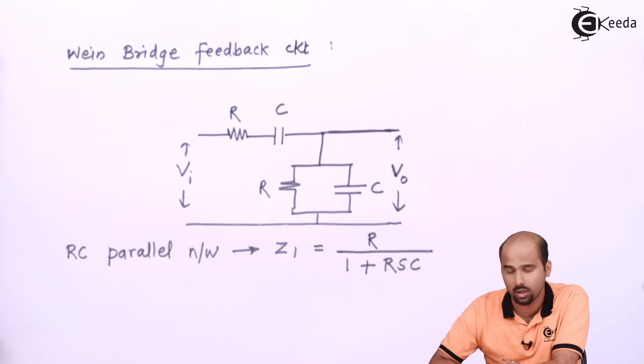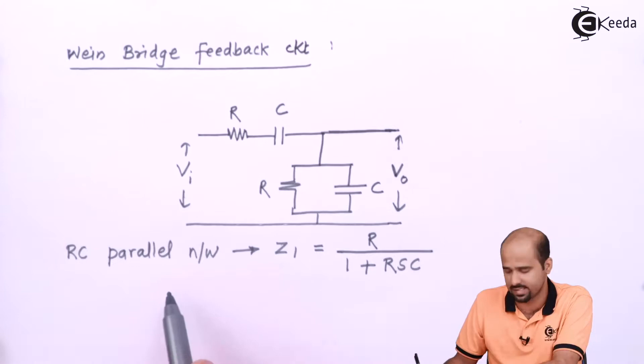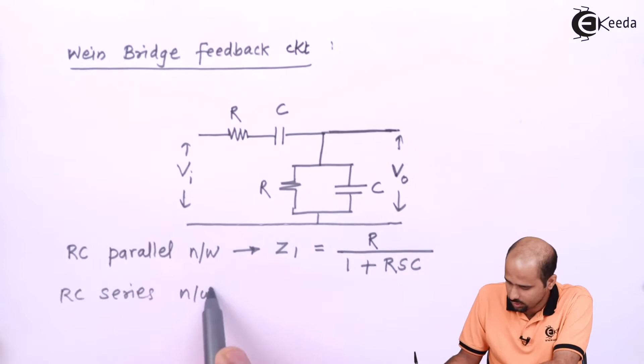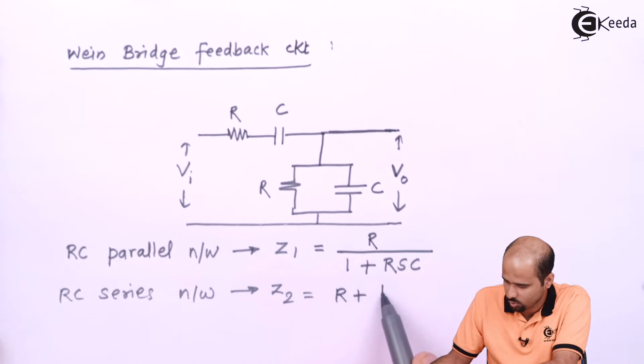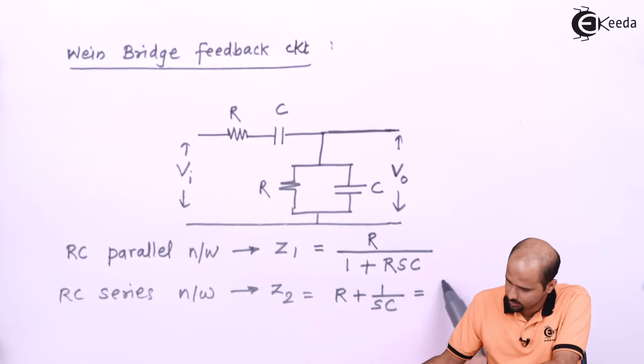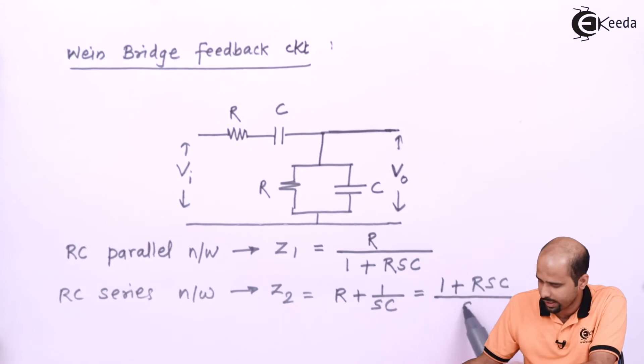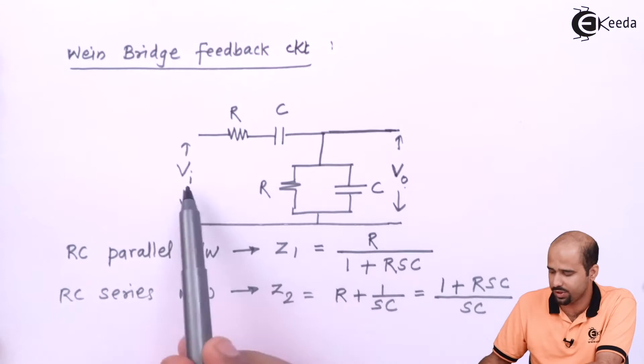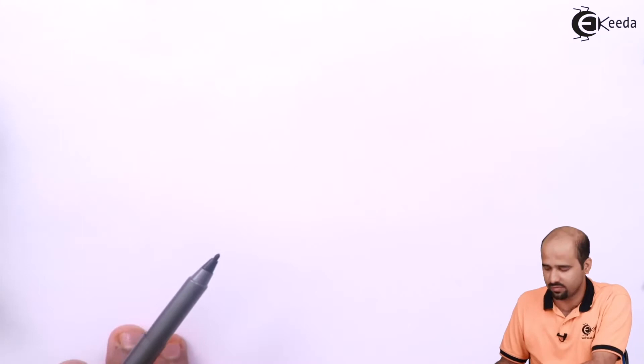RC series network is nothing but Z2, which is R plus 1 upon SC, and that is nothing but 1 plus RSC divided by SC. We have to calculate VO divided by VI, and that is obtained by the voltage divider rule. So let us calculate that particular value using VDR.